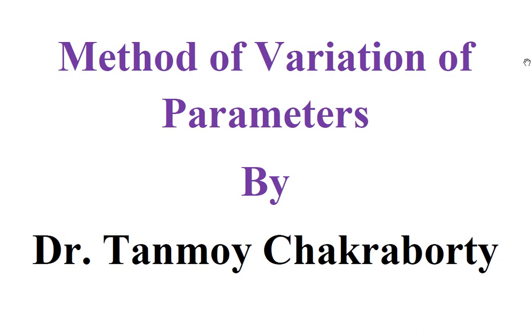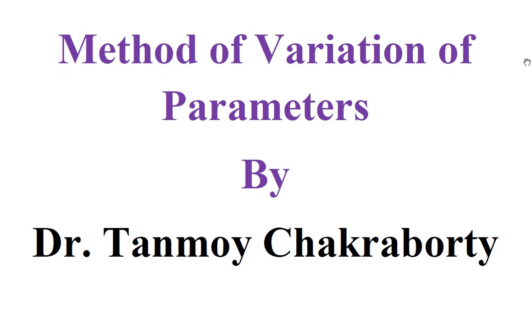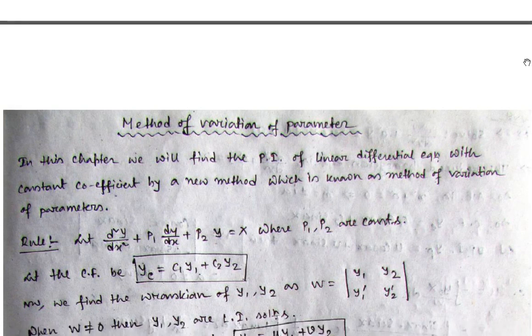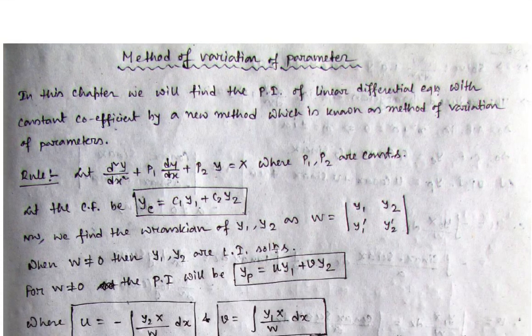This is one of the most important methods for solving the particular integral of difficult type of functions. In the D operator method we have learned how to find the particular integral for some special types of functions — say exponential functions, sin x or cos x type functions, polynomial functions, and their combined forms. But there are many functions left, like log of something, tan x, sec x, or other trigonometric functions, which cannot be solved easily with the D operator shortcut rules 1 to 5.